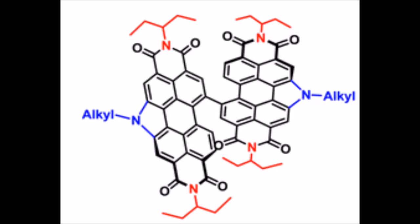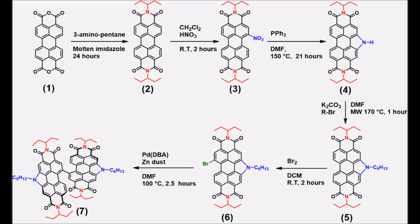Our target material is an N-annulated perylene diamide dimer. According to the paper, this material was made in six steps with an overall yield of about 50%.